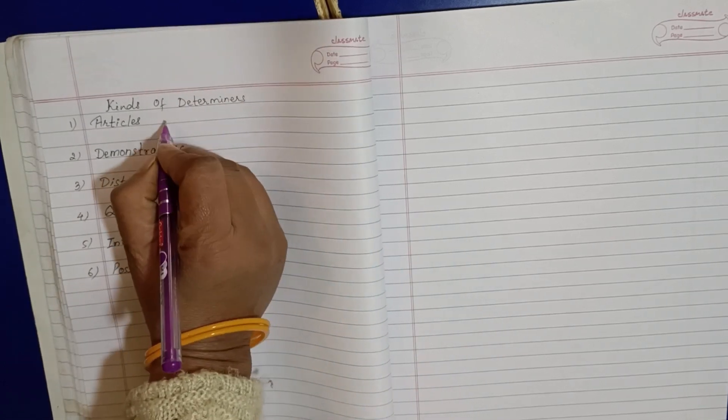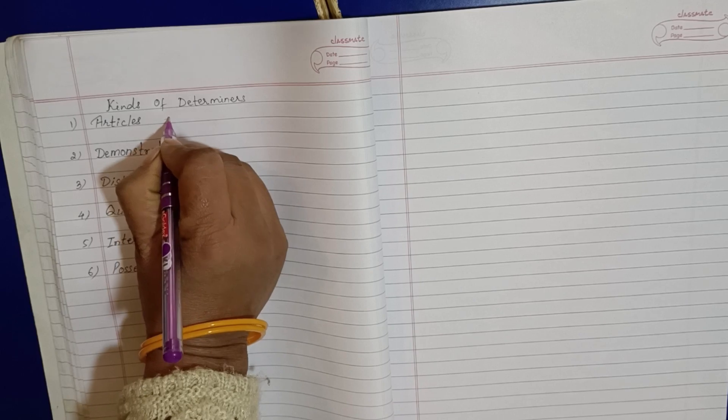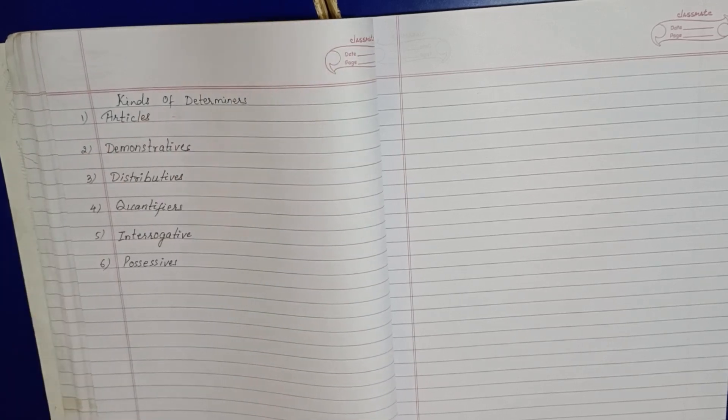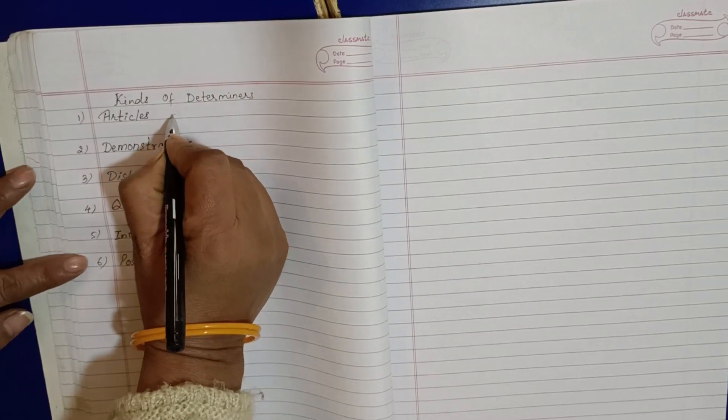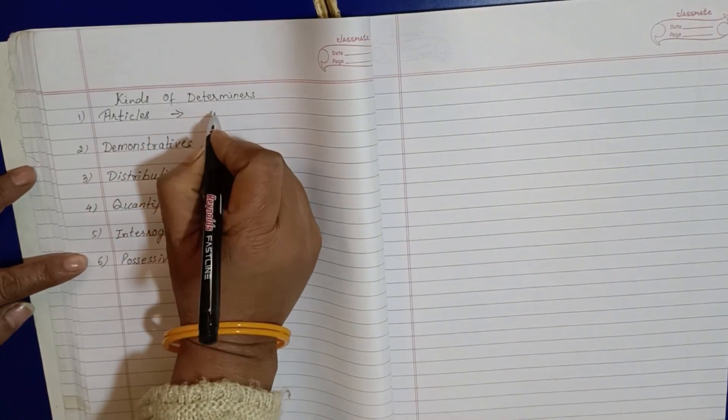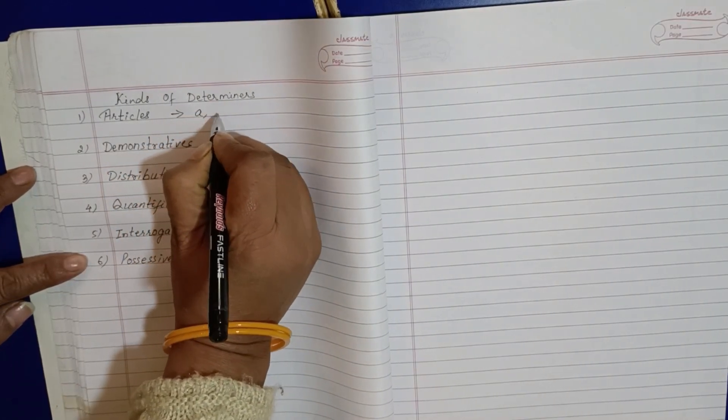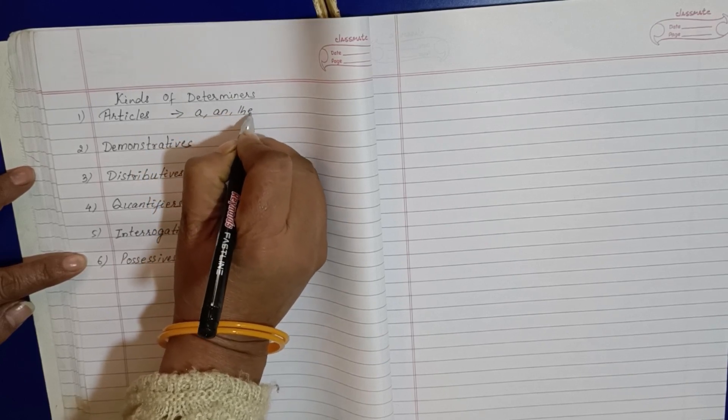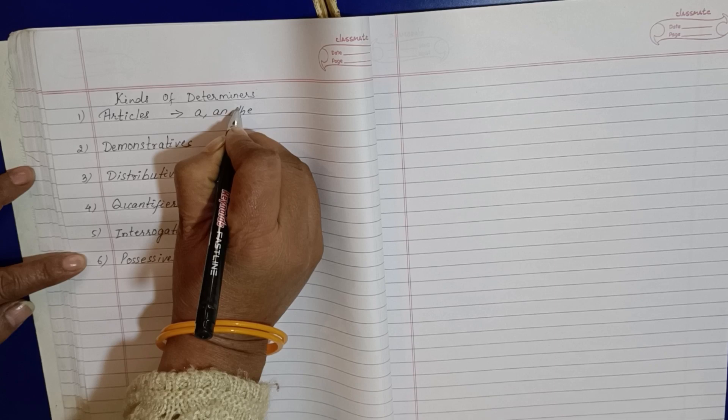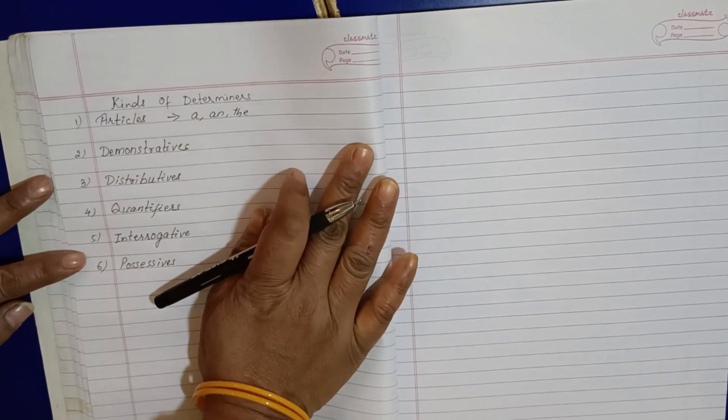So number first, article I have explained before. So tell me, articles - a, an, the, isn't it? This is the article, very good.